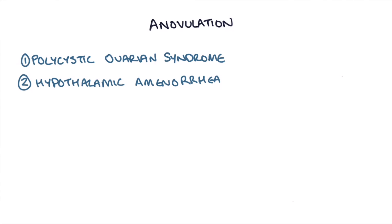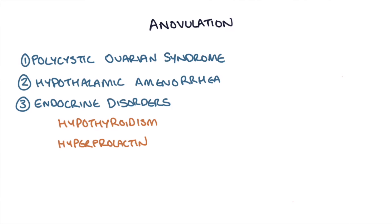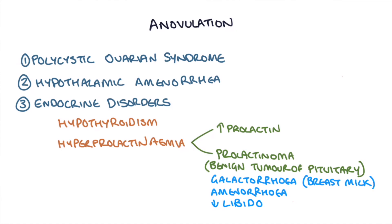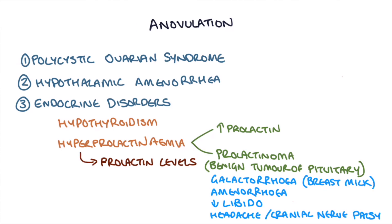Another cause of anovulation is endocrine disorders such as hyperthyroidism or hyperprolactinaemia. A high prolactin level is usually caused by a prolactinoma — a benign tumour of the pituitary gland that secretes prolactin. The person may have galactorrhoea (breast milk production), amenorrhoea, and reduced libido, and if the tumour grows large enough, symptoms such as headaches or cranial nerve palsies. This is investigated by checking prolactin levels in the blood and performing an MRI of the brain to look for the tumour.